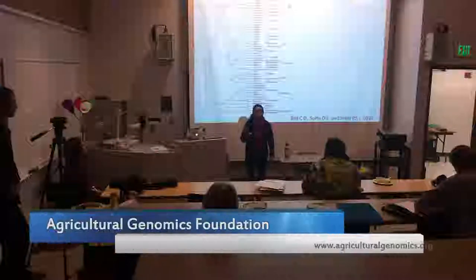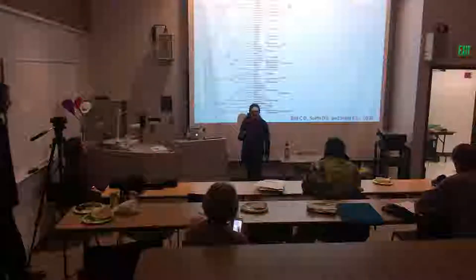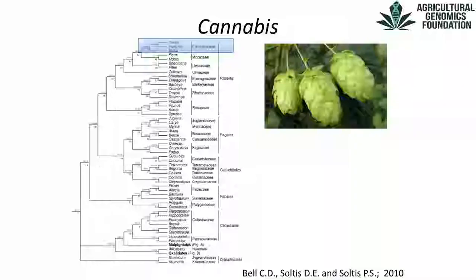Cannabis is part of the family Cannabiaceae. This family has about 100 different species and about 10 different genera. One of these other genera is Humulus — Hops — which is actually the closest living species to cannabis.